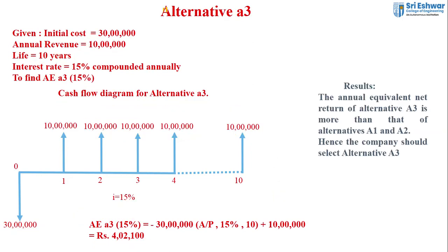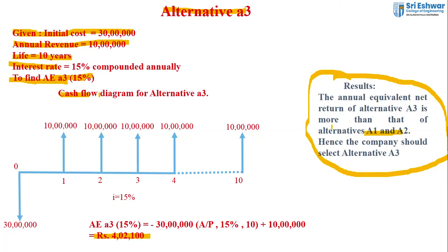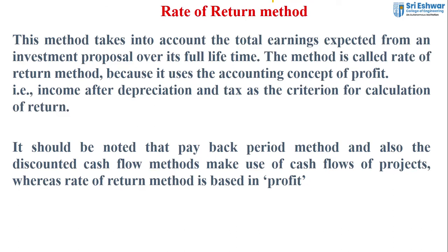For Alternative A3, the initial cost is 30 lakh, annual revenue is 10 lakh, life is 10 years, and interest rate is 15% compounded annually. The Annual Equivalent value for A3 equals 4 lakh 2,100. Since the annual equivalent net return of Alternative A3 is more than A1 and A2, the company should select Alternative A3. This is the procedure to solve problems using the Annual Equivalent Method.